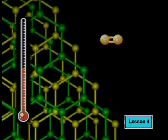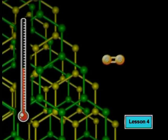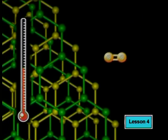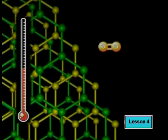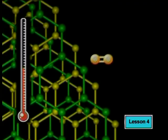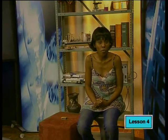When the Bunsen burner gives additional heat energy to the reactants — oxygen and carbon — the collisions become more violent. There is now enough energy to weaken, but not totally break, the chemical bonds within the reactants. Although the carbon atoms and oxygen atoms try to stick together, there is still not enough energy to form permanent new bonds.